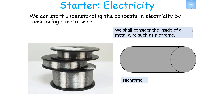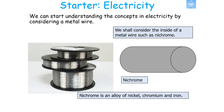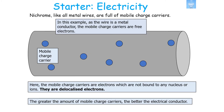We can start understanding concepts in electricity by considering a metal wire such as nichrome. Nichrome is an alloy of nickel, chromium and iron. Like all metal wires, nichrome is full of mobile charge carriers. As the wire is a metal conductor, the mobile charge carriers are free electrons — electrons which are not bound to any nuclei or ions; they are delocalised electrons. The greater the amount of mobile charge carriers in your conductor, the better the electrical conductor.